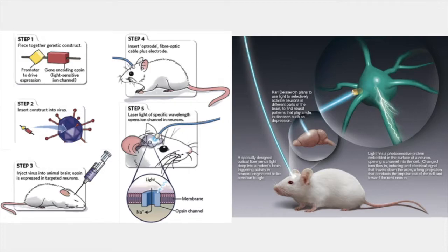An optogenetic experiment can be done following five basic steps. First, you design a DNA construct that has a channelrhodopsin gene and a promoter sequence so that channelrhodopsin is only expressed in specific cells. The construct is then inserted into a virus, and the virus is injected into a specific brain area. An optic fiber can be implanted into the animal, and light can be delivered through the optic fiber. This allows you to control when the cells are turned on and off by controlling the light.